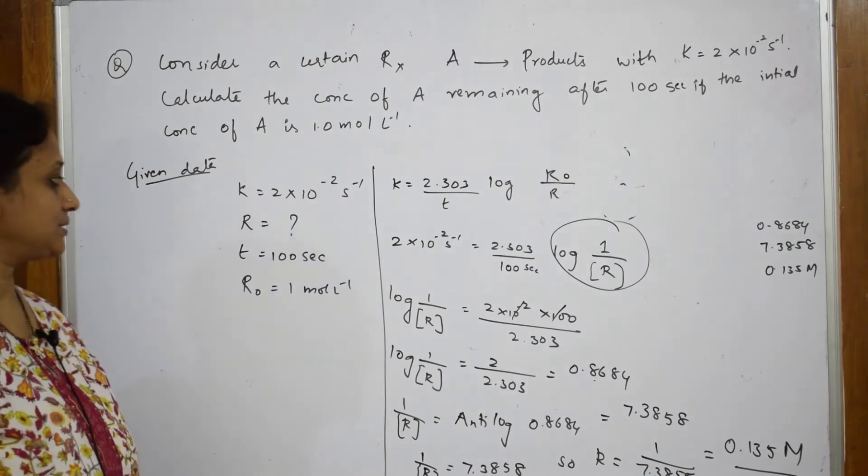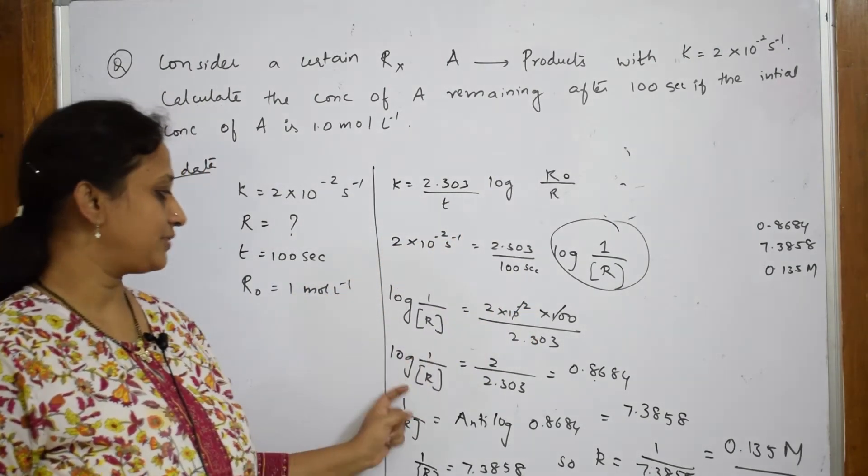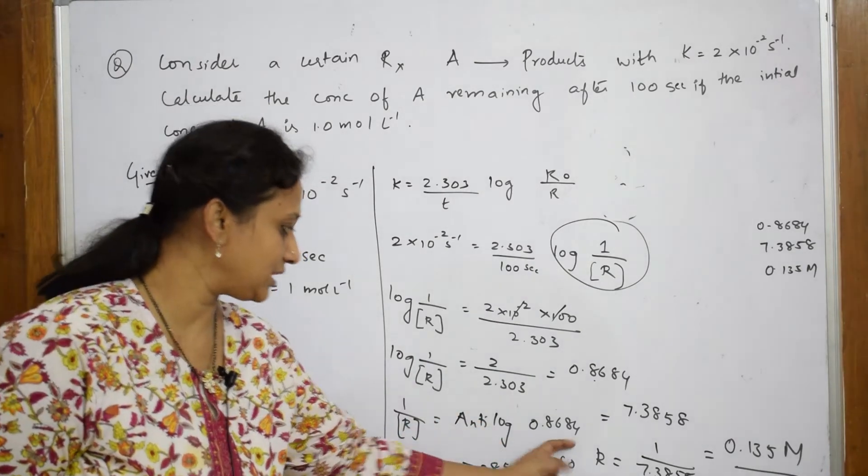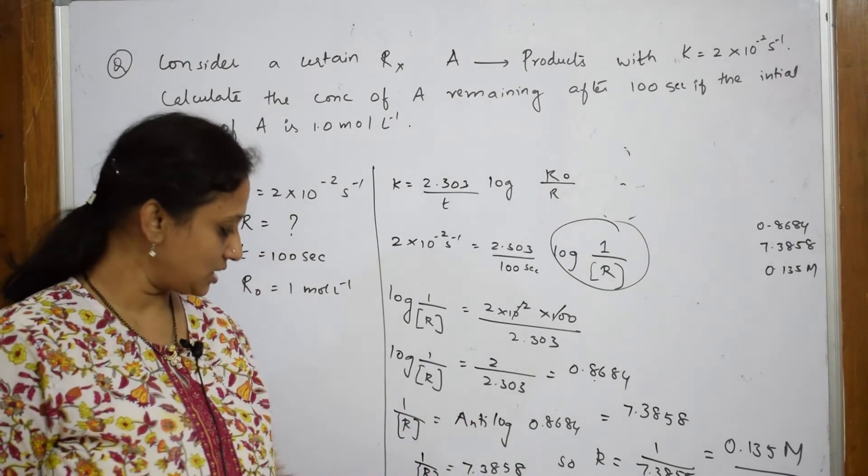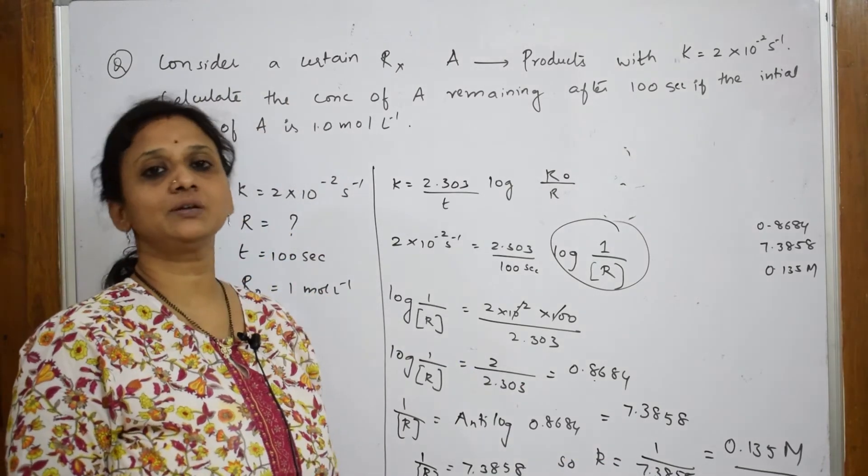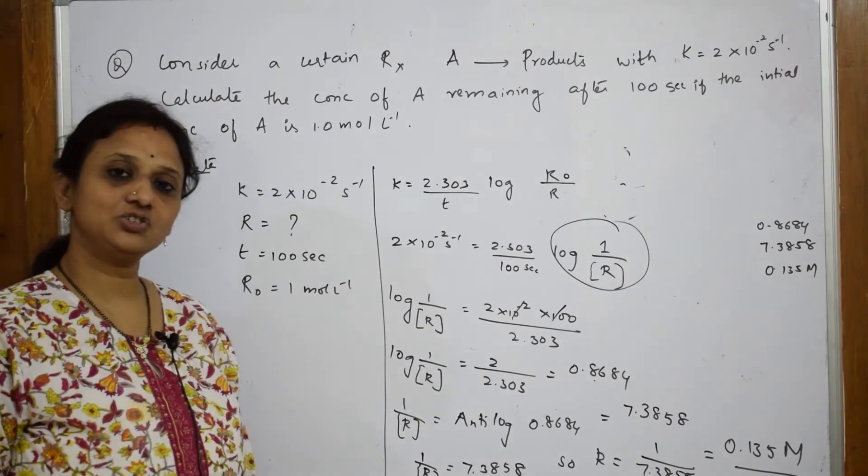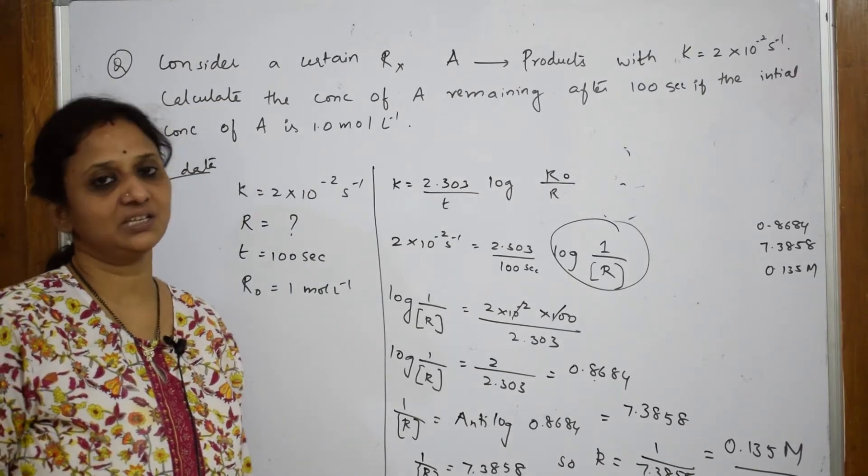This is your complete sum, given data, formula, substitution, finding the antilog. After finding the antilog, 1 by R is so much, R is equal to 1 by 7.3858, I get an answer of 0.135 molar. Please note the numerical, please practice it. Such numericals are easy to attempt in the exam.